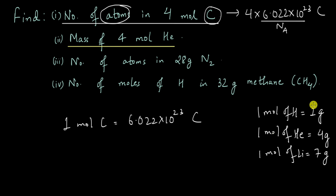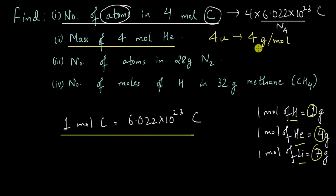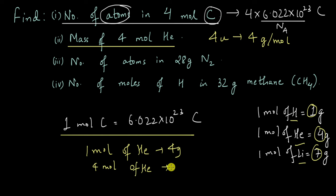If you've studied your periodic table, you might recognize the numbers 1, 4, 7 — these are the atomic masses of hydrogen, helium, and lithium. This definition of mole allows us to write the mass of one mole of anything as the atomic mass in grams. Helium has an average atomic mass of 4 atomic mass units, meaning there are 4 grams in one mole of helium — that's its molar mass. So for 4 moles of helium: one mole has 4 grams, so 4 moles have a mass of 16 grams.